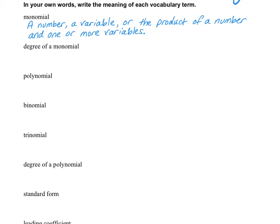A monomial is a number or a variable, or if you want to take numbers and variables and multiply them together, then that would be a monomial. The degree of the monomial is the sum — you're going to add together all of the exponents of the variables only.